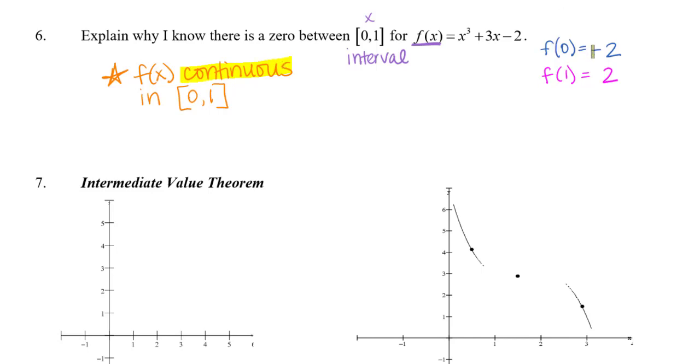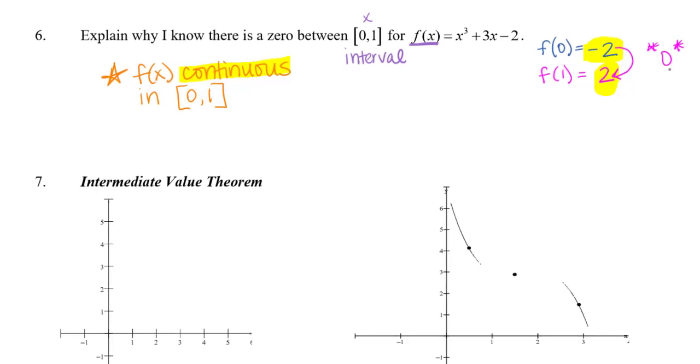Now, if I know that one of my function values has a negative output, or a negative y value, and another function's value's output gives me a positive value, and I know that I'm continuous like we talked about, the only way to get from a negative y value to a positive y value is to go through what number? Yep, 0. Right? The only way to get from negatives to positive, if you are continuous, is that you must cross through 0. So, I can say that because one value is negative, and one value is positive, and I am continuous, I know that f of x must equal 0 in between there.